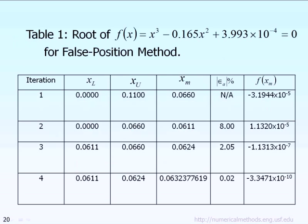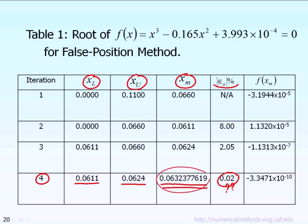And so the procedure is repeated until, let's say, by the time you get to 4 iterations, iteration number 4, we will find out that at that iteration 4, the new lower bound is 0.0611, the new upper bound is 0.0624. The predicted root, the newest predicted root is this value right here, 0.0632377619. And the absolute relative error norm is 0.02%. How do we get this number? Well, again, this number 0.02% basically is equal to the current predicted root, which is this value, subtract the previous predicted root, which is this value, and then divide by the current predicted root, which is this value. When we do that, you will get 0.02%.